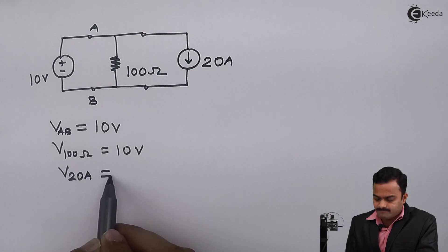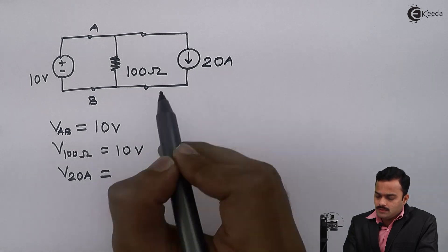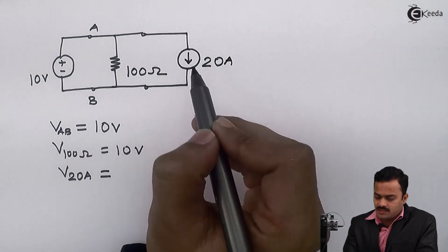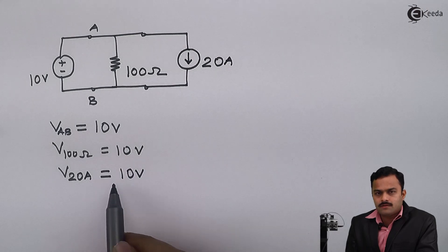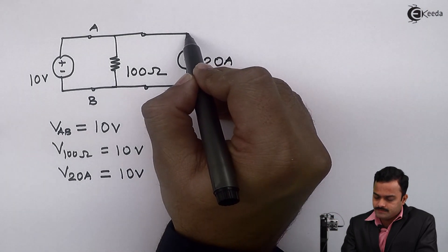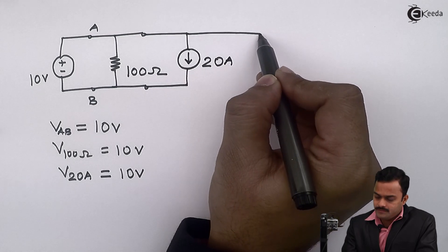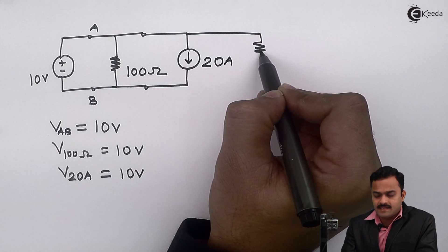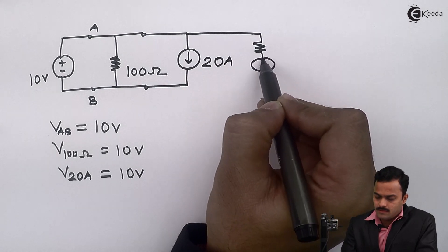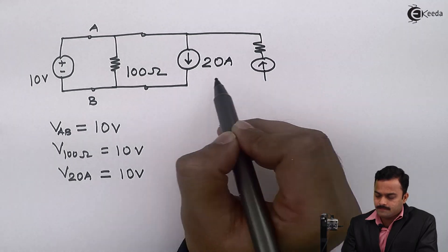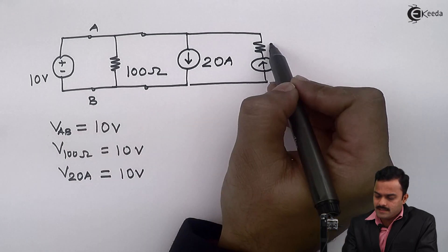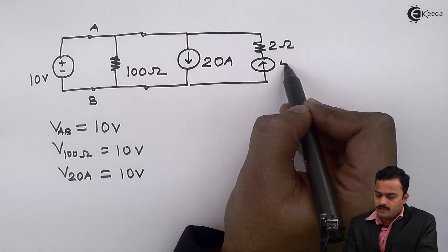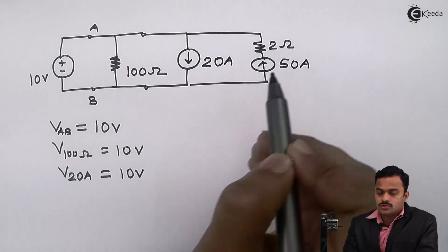My answer for this question will be once again 10 volts. Let's extend further. I have a resistance and current source connected between points A and B. Let's take 2 ohms and 50 amperes.